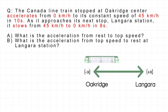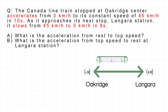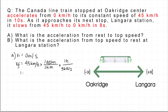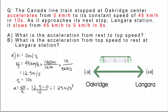In Part A, we can predict that the acceleration will be positive since the train starts from rest and ends with a velocity to the right — in this case, a positive direction. Because acceleration is in the same direction as the change in velocity, acceleration will also be positive. From the question, the initial velocity is 0 meters per second and the final velocity is 45 kilometers per hour, which equals 12.5 meters per second. The change in time is 10 seconds. Using the acceleration equation, Δv over t, we get that the acceleration is 1.25 meters per second squared.